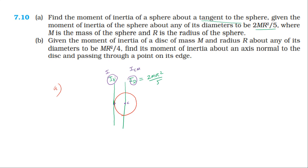The tangent axis and the diameter axis through the center of mass are parallel. According to the parallel axis theorem, the moment of inertia about any axis is equal to the moment of inertia about the center of mass axis plus the product of mass into the square of the perpendicular distance between the two parallel axes. If I is the moment of inertia about the tangent, then I = I_cm + mx².